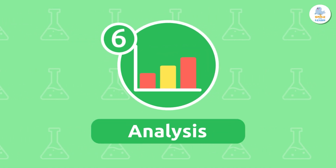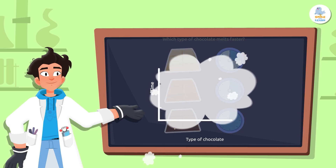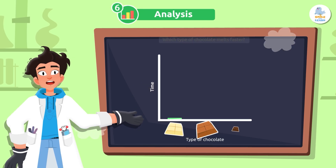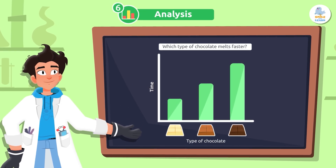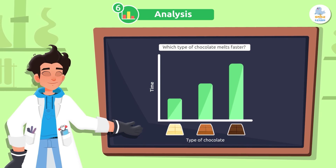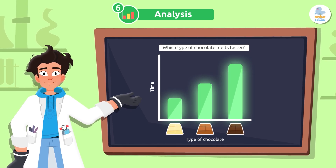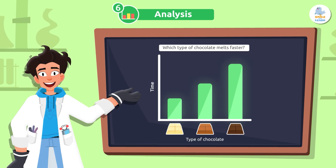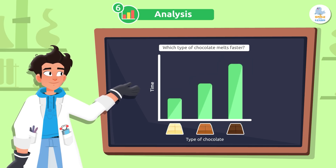Analysis. Let's analyze the data. We can compare the time it took for each type of chocolate to melt and represent it visually on a bar graph. Graphs visually represent our data. Was our hypothesis correct?